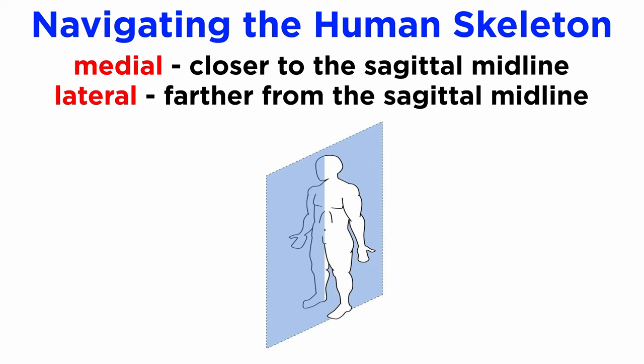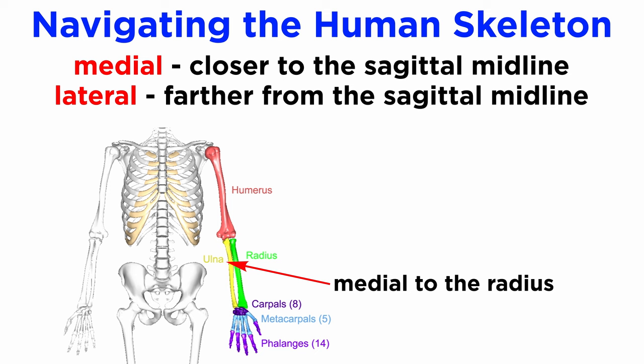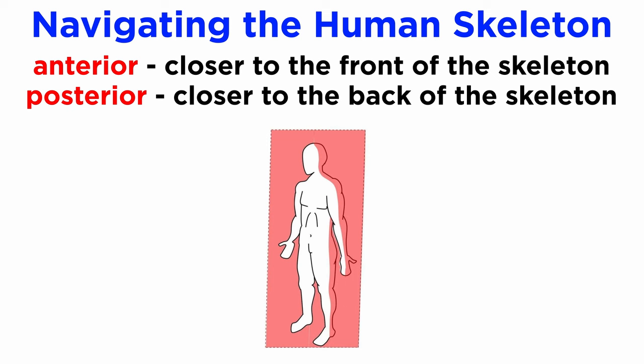Medial and lateral refer to a bone's position or surface in relation to the sagittal midline of the body. The ulna, a forearm bone, is medial to the radius. Likewise, the radius is lateral to the ulna.